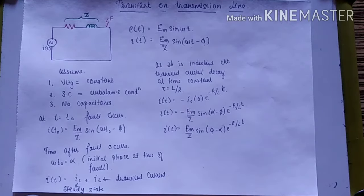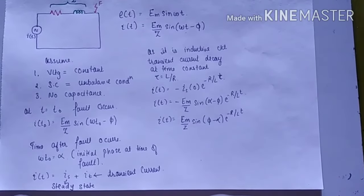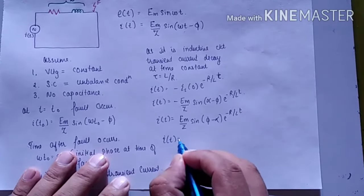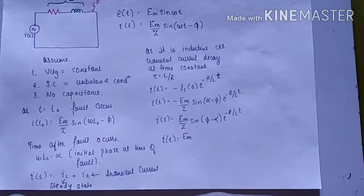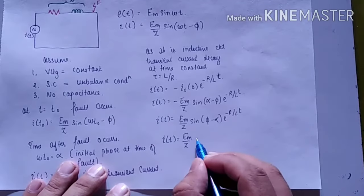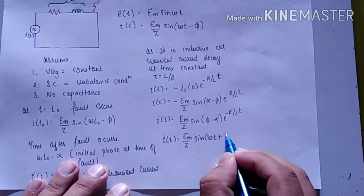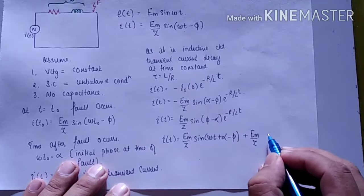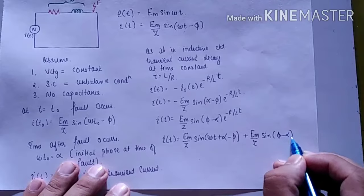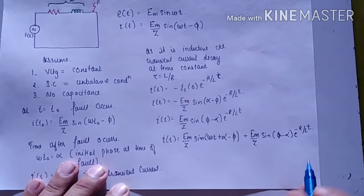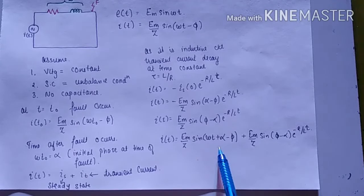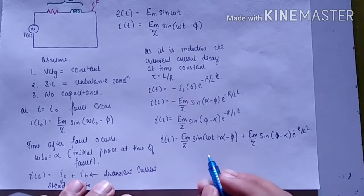Therefore, the total current I(t) = (Em/Z)·sin(ωt + α − φ) + (Em/Z)·sin(φ − α)·e^(−R/L·t). The first term is the symmetrical AC component and the second term is the DC offset transient current.